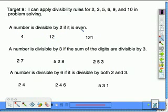A number is divisible by 2 if it's even. Here we have the number 4. It's divisible by 2 because it ends in an even number, which is going to be a 0, 2, 4, 6, or an 8. 12 ends in a 2, so it's also even. The number 121 ends in a 1, which makes it not even. It also makes it not divisible by 2.